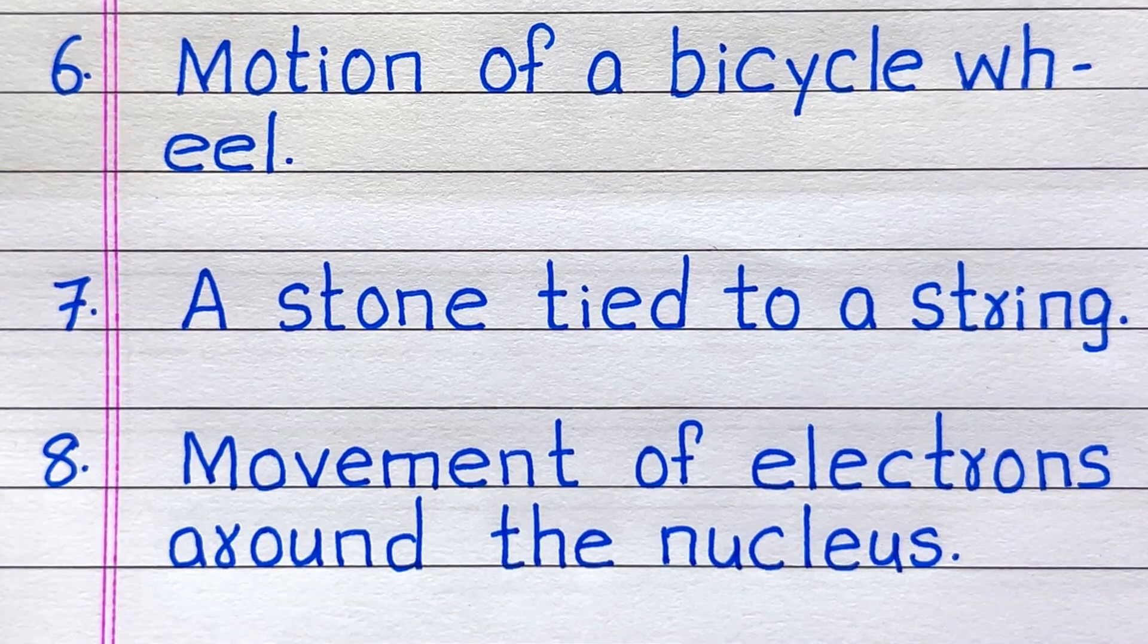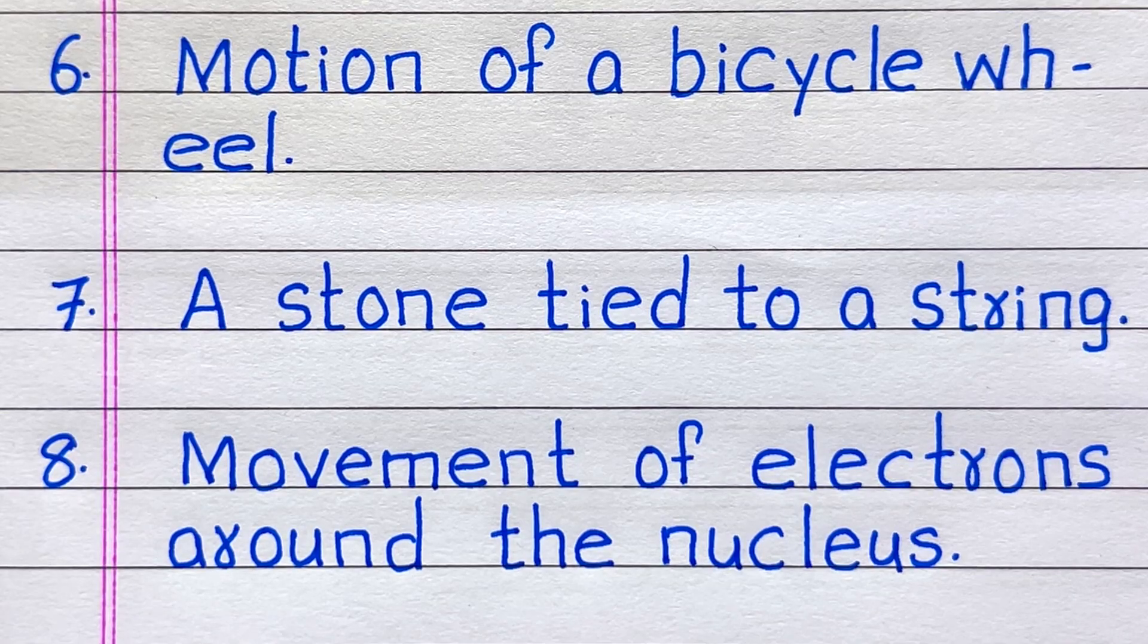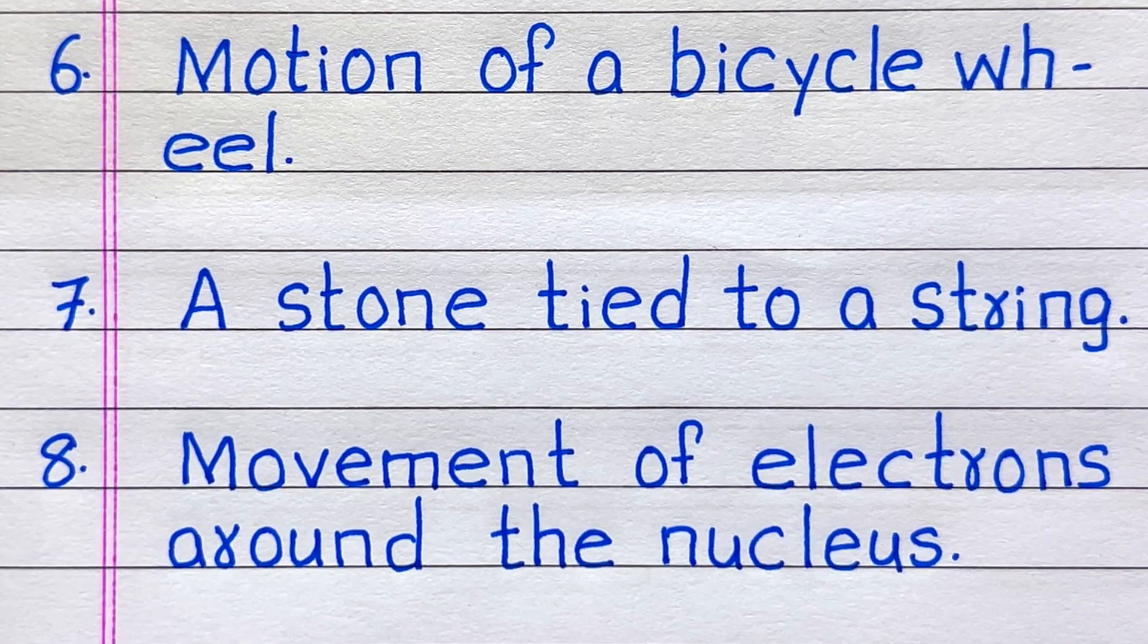Sixth example of a circular motion is motion of a bicycle wheel. Seventh, a stone tied to a string.